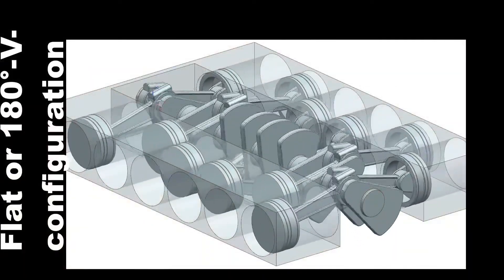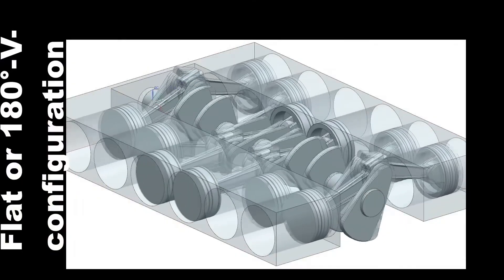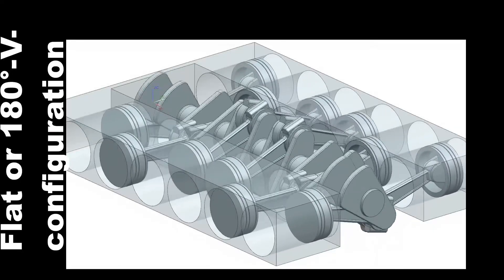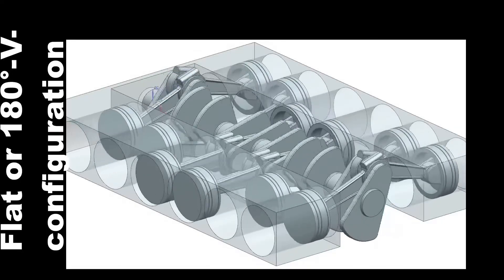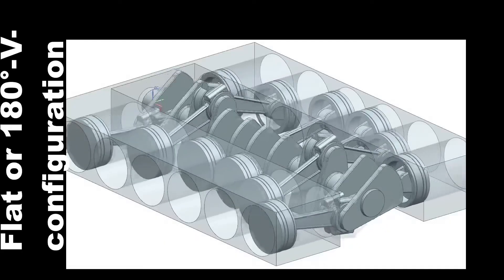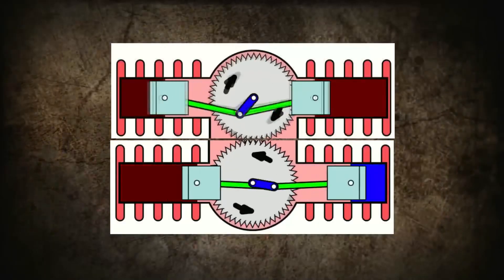In a V-type engine with a cylinder bank angle of 180 degrees, the connecting rods of neighboring cylinders are attached to a single crank pin. Accordingly, the pistons move in the same direction — when one reaches top dead center, the other is at bottom dead center. This engine makes no sense with two cylinders, as it would be extremely unbalanced. It makes sense in a combination of several pairs of cylinders, either in the form of a flat engine or as an H-type engine.